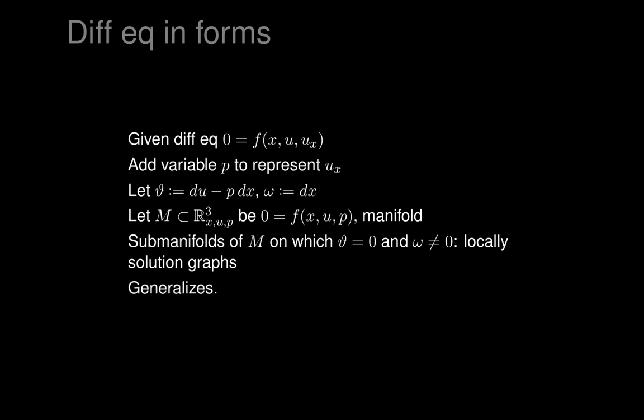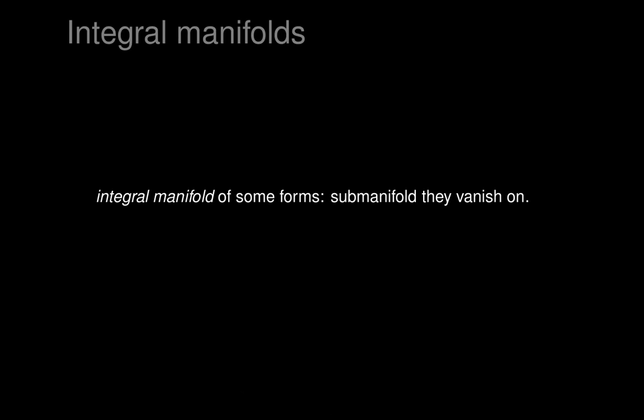This generalizes immediately to all sorts of other problems. If we have many more variables, many more functions, and differential equations of any order, we can easily rewrite them the same way. So we want to think about getting forms to vanish on submanifolds. An integral manifold of some collection of differential forms is a submanifold on which the forms vanish. Our problem is then: given a manifold and some differential forms, can we find the integral manifolds of those forms?